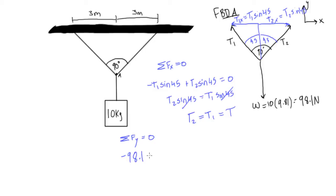Negative 98.1, this is going to be plus, well, we'll have t1 cos of 45, right, that's going to be the x component of this t1, or sorry, the y component, that's going straight up, and then we'll have plus t2, which is also times cos of 45.